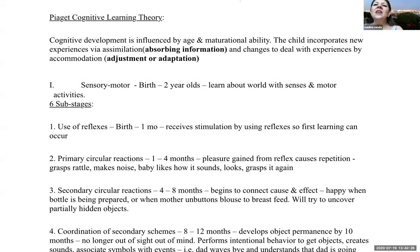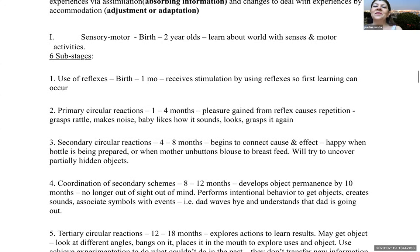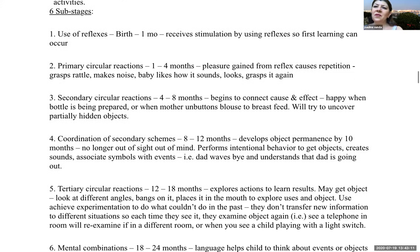Piaget's cognitive learning theory: cognitive development is influenced by age and maturity. The child incorporates new experiences via assimilation — absorbing information — and changes to deal with experiences through accommodation — adjusting or adapting. The first stage is sensorimotor, from birth to two years of age, where children learn about the world with their senses and motor activities. There are six sub-stages. The first is the use of reflexes, birth to one month, where children receive stimulation through reflexes and first learning can occur.